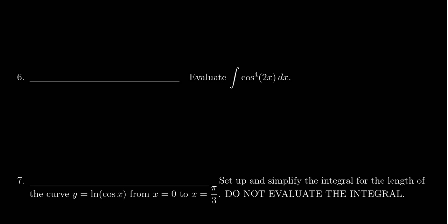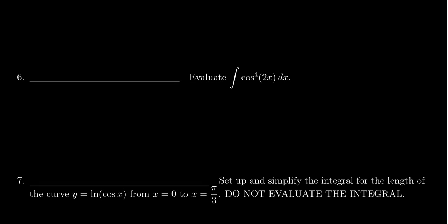In this video, we provide the solution to question number 6 for practice exam number 2 for math 1220, in which case we have to evaluate the trigonometric integral cosine to the 4th of 2x dx.